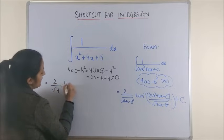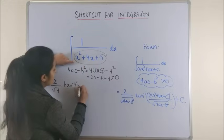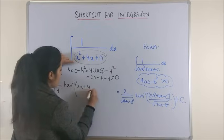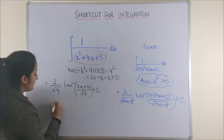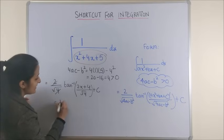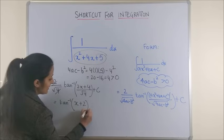When you simplify, these two get cancelled. It is simply tan inverse of x plus 2 plus c.